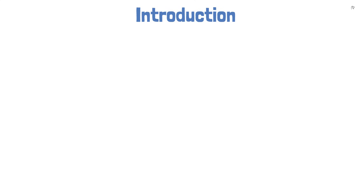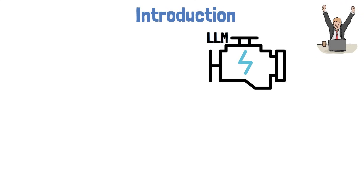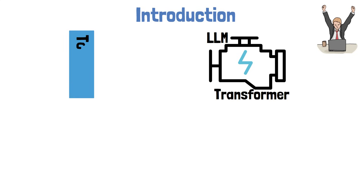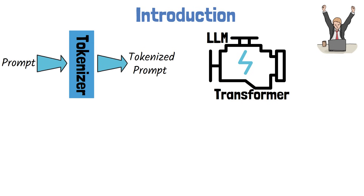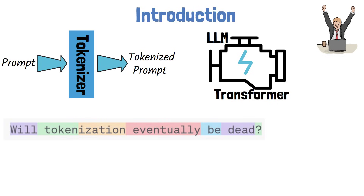In recent years, large language models have revolutionized the field of AI, becoming an essential tool for many tasks. The main component in the architecture of large language models is a large transformer model. But to process prompts, large language models use another component called a tokenizer. The tokenizer converts the prompt into tokens, which are part of the model's vocabulary. The large language model processes the tokenized input to generate the response using the same token vocabulary.